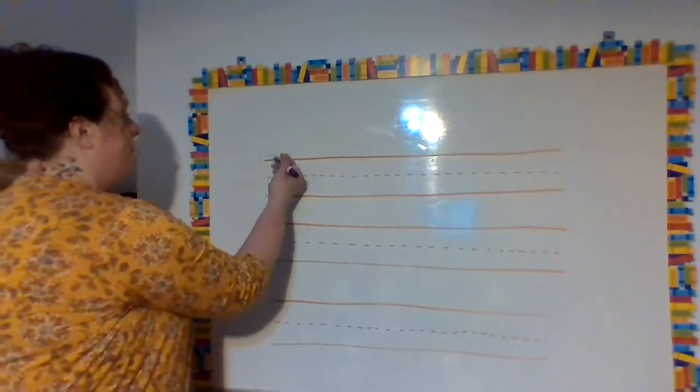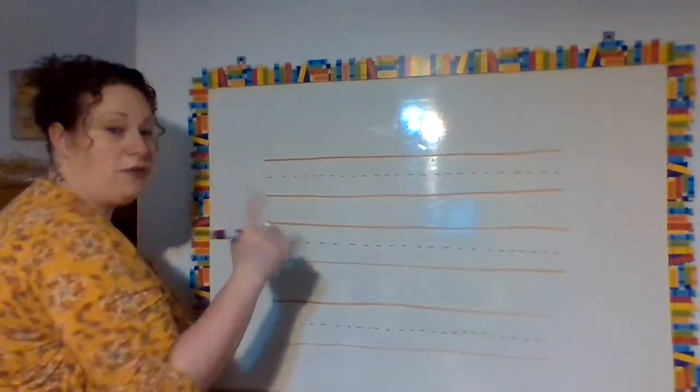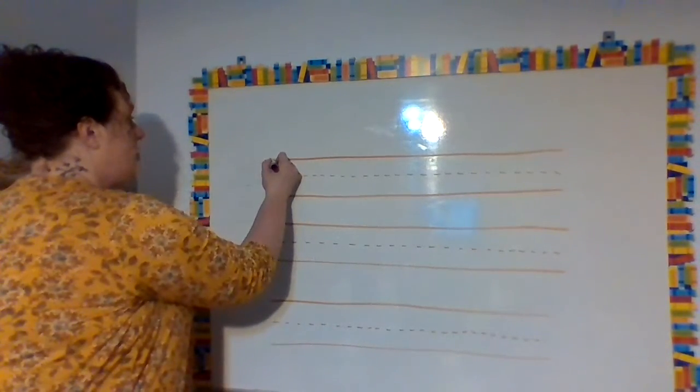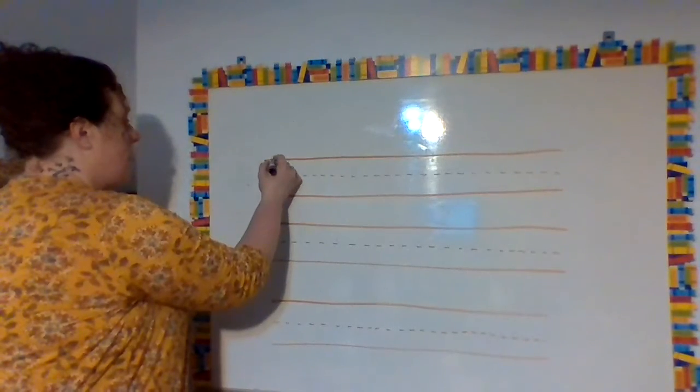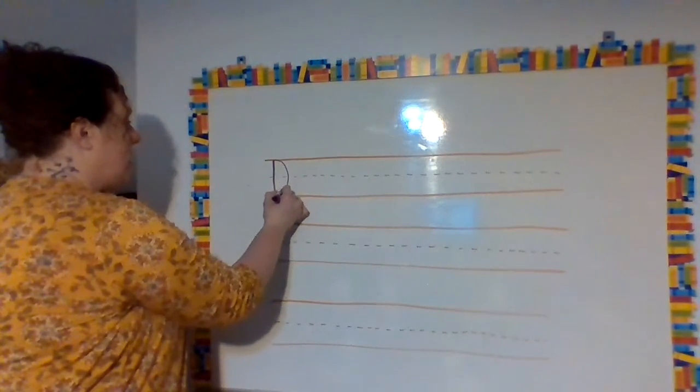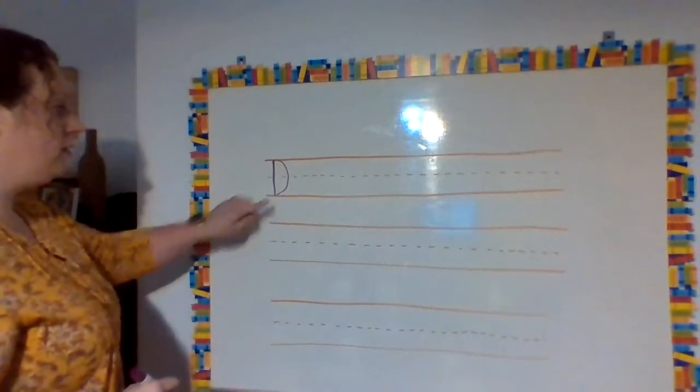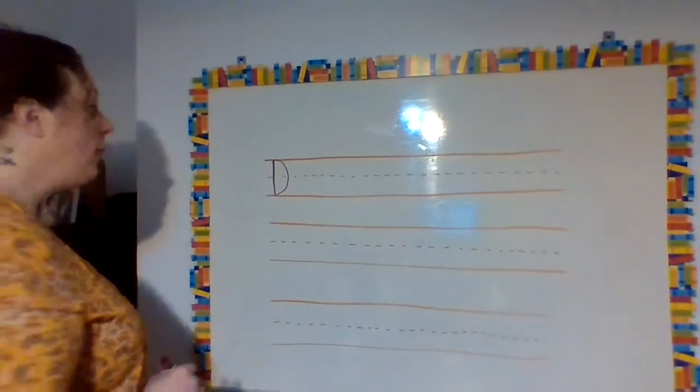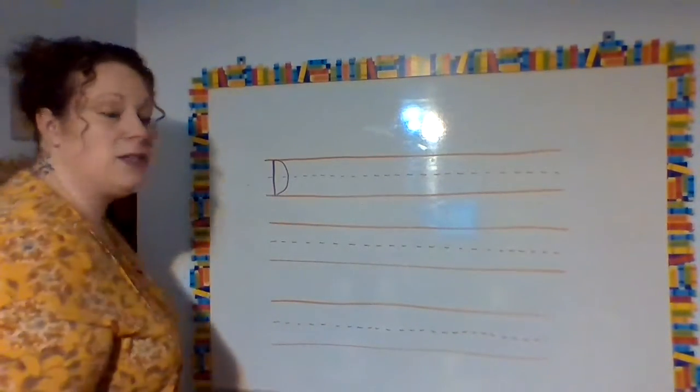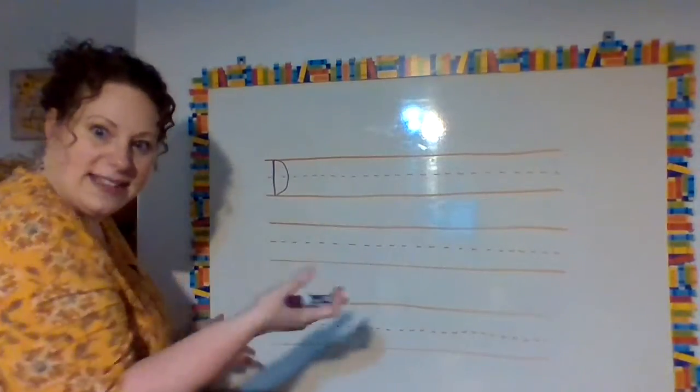So you're going to start at this top line. OK, now I want to show you before I do this, this was your D that you learned and it's actually on your paper one line and you connect the dots and come around, make that curve. That's your D. Now, I'm going to show you how to do a cursive D. Now, this one's a little bit just a little more fancy. Yeah, that's all. Don't panic.